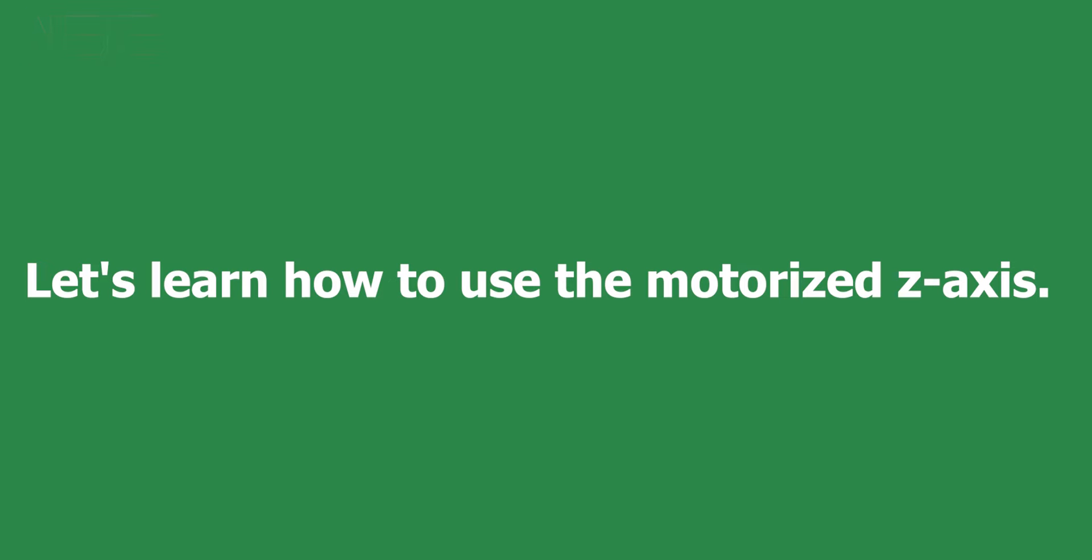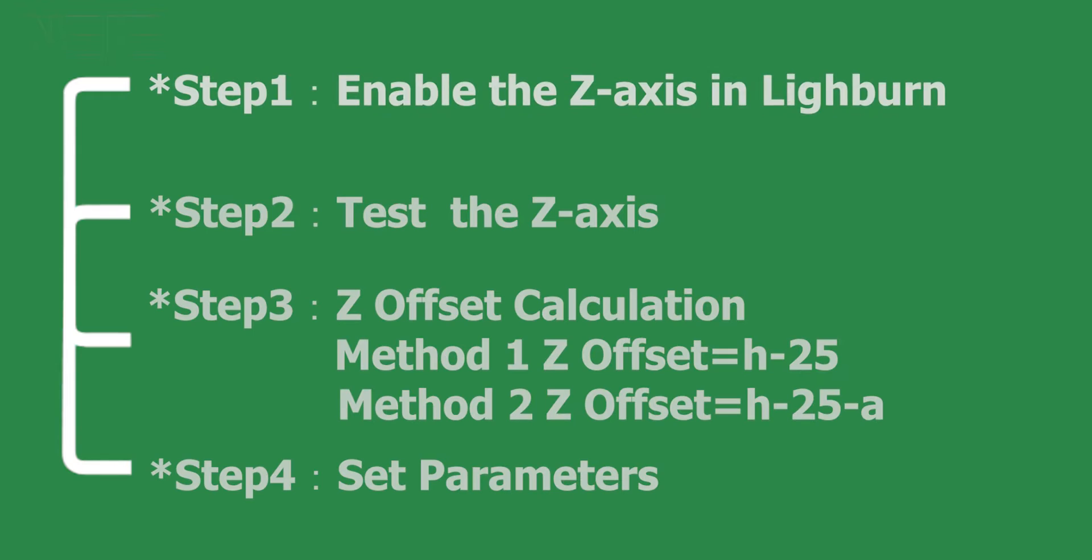Let's learn how to use the motorized Z-axis. First, we need to enable Z-axis in device settings. Click Enable Z-axis, then click Relative Z Moves Only.